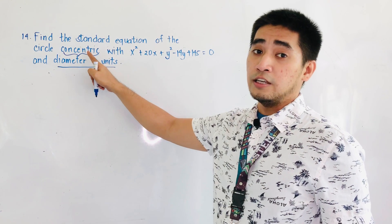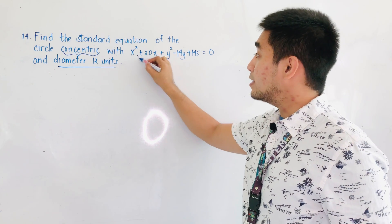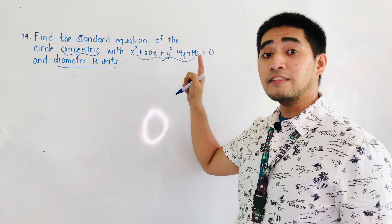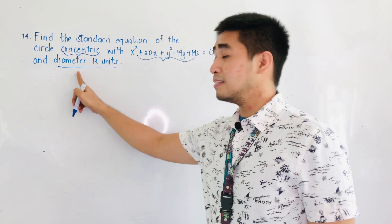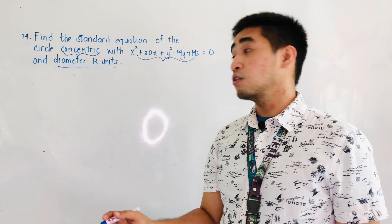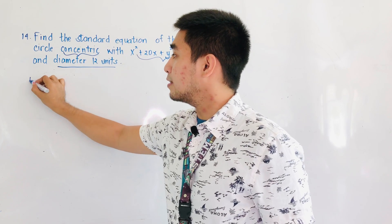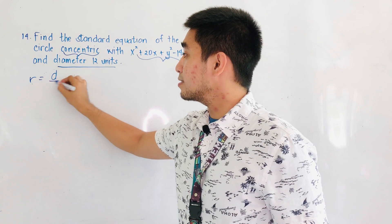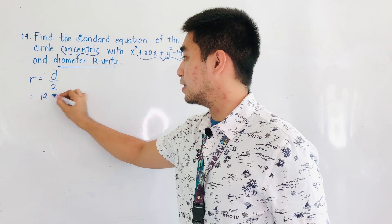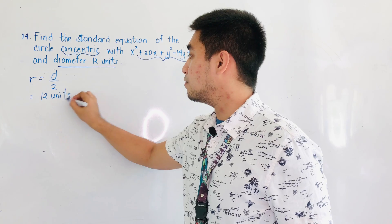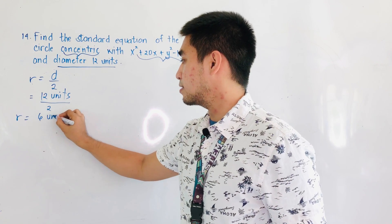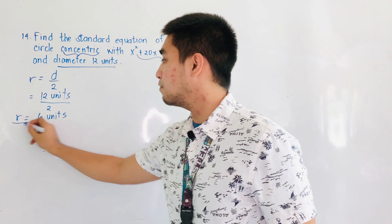When we say concentric, it means that they share the same center but they do not share the same radius because we have another given in the second condition. For the first condition, it shares the same center with this equation but has a different radius. We will be getting the radius from the second condition that the diameter is equal to 12 units. Always remember that the radius is always diameter divided by 2. So if the diameter is 12 units, we divide 12 by 2 and our radius would be 6 units.